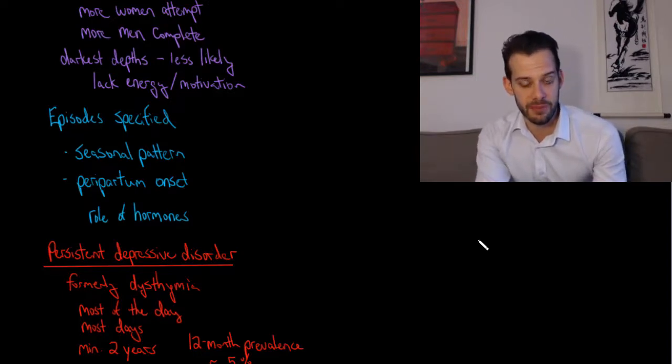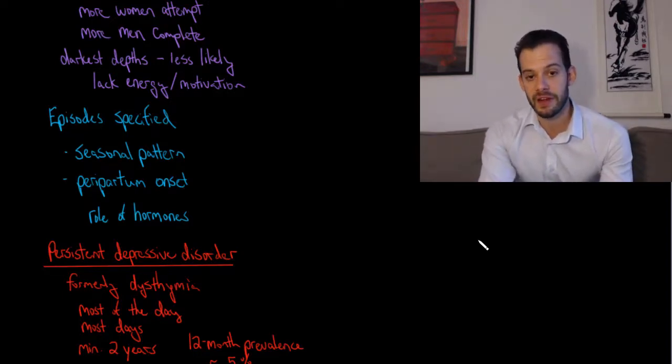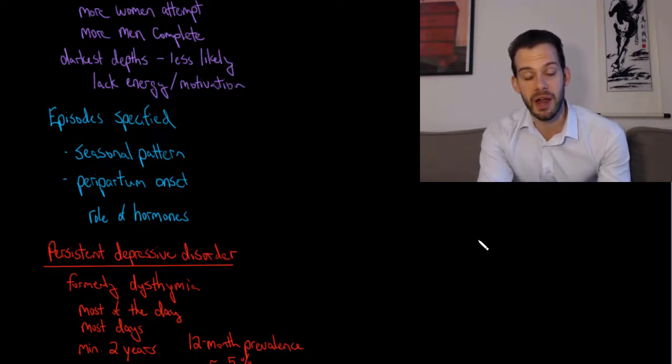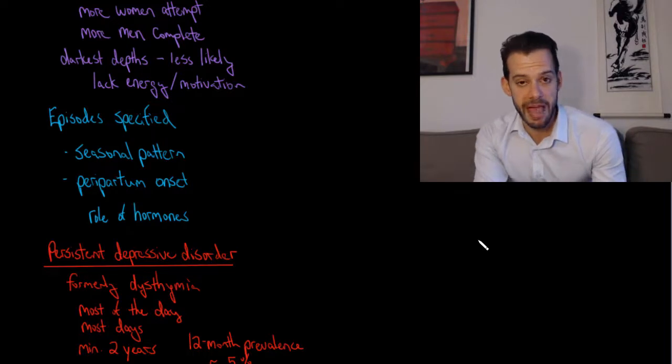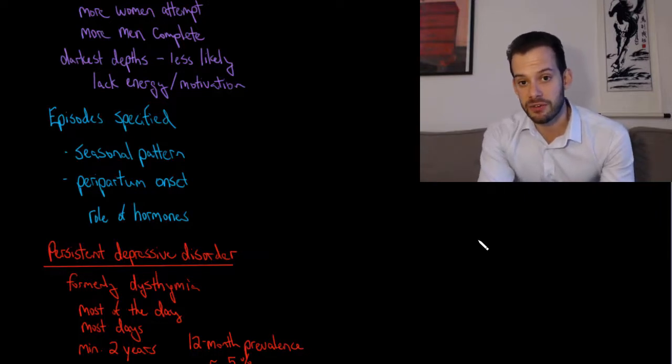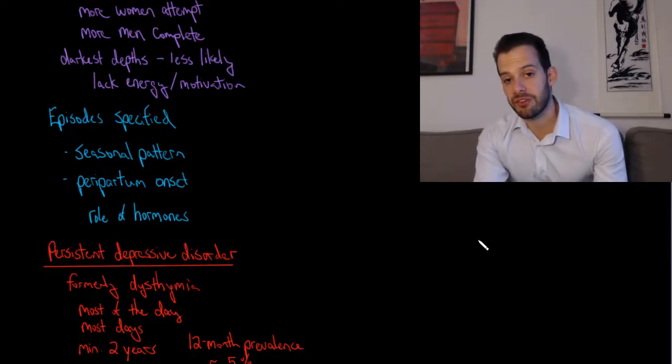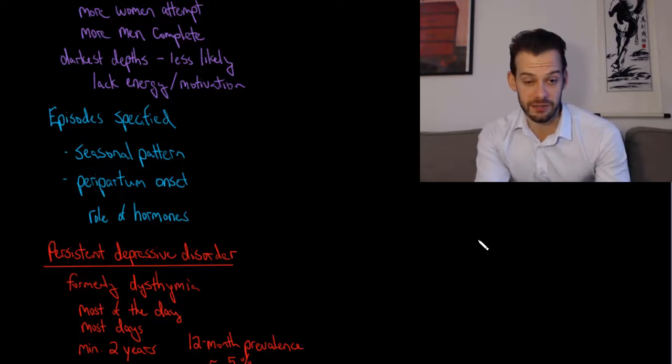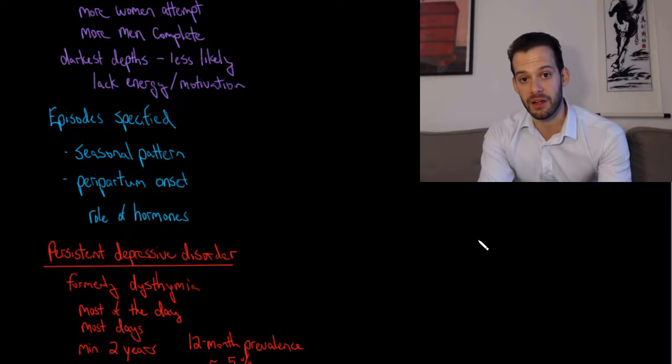And this is where a person has episodes of major depressive disorder that occur in the fall or winter, but not in the spring and summer. And the reason for this seasonal pattern seems to be related to hours of sunlight. So as the days get shorter and the person's not getting as much sunlight, we see that they're more likely to experience depressive episodes. But when the days are longer and there's more sunlight, they're less likely to experience this. And one of the treatments for this is to use light therapy. This is something I'll talk about in a future video when we talk about treatments.